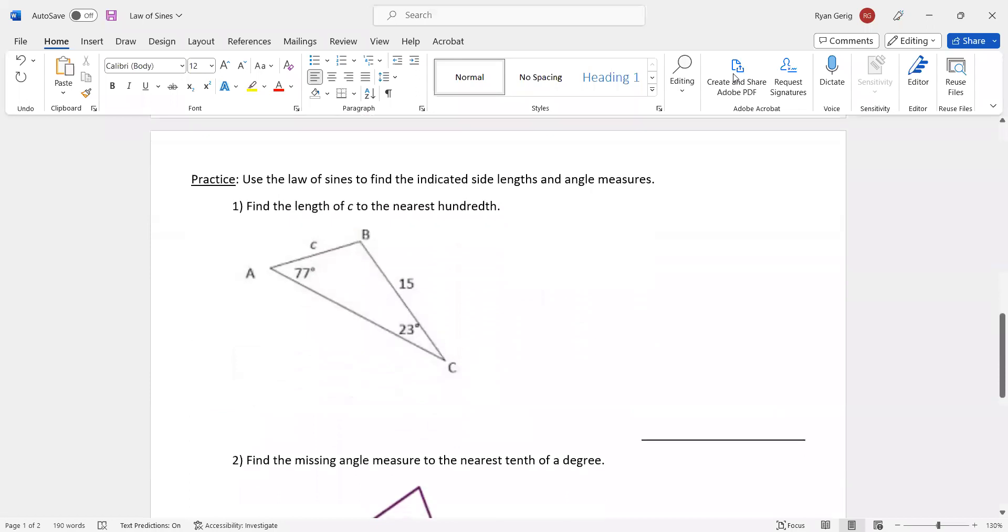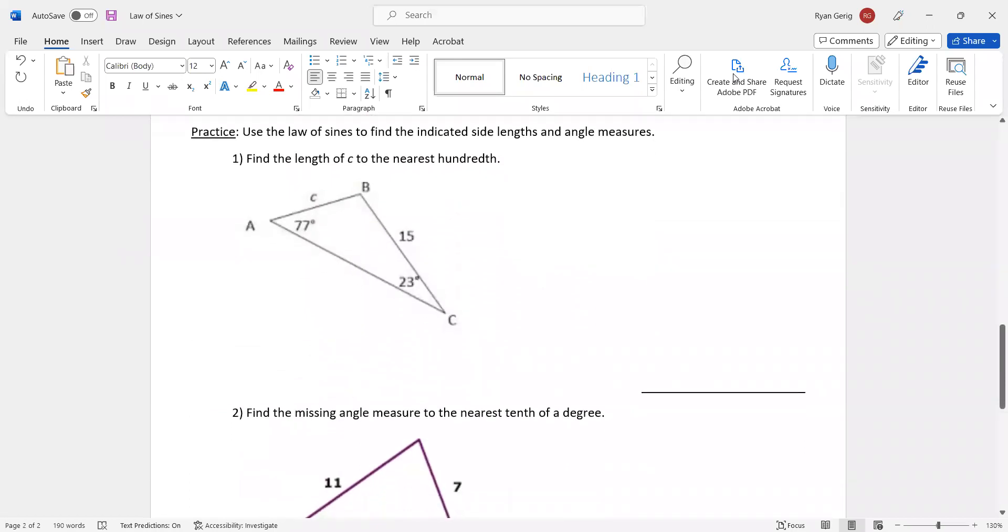What you're going to have to do is what's on the back. Use the law of sines to find the indicated side lengths and angle measures. With law of sines, what I like to look for is angles and the side across from it. So angle A is 77. The side across from it is side A, so 15. Angle C is 23. The side across from it is C. In this one, it's ready to go.